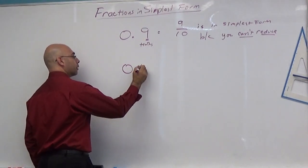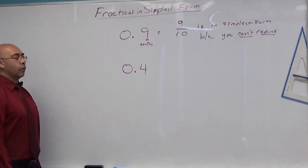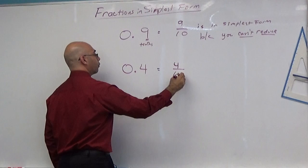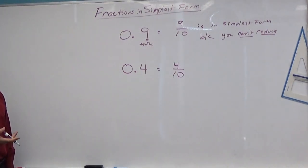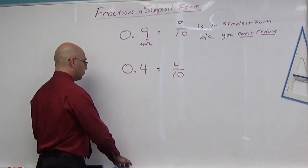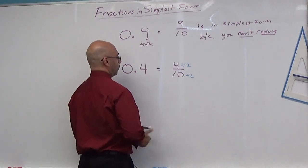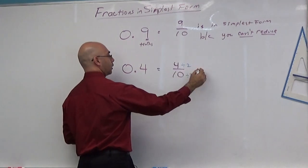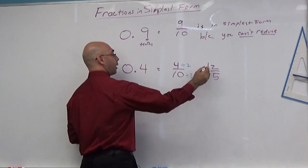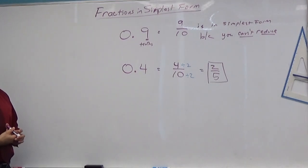How do I write that as a fraction? Yes, this is in the tenths place, so you write it as 4 over 10. Is this in simplest form? Why not? Oh, I could divide the top and bottom by 2. Exactly. Whatever you do to the numerator, you do the same thing to the denominator. That becomes 2 over 5. Can't reduce that anymore, so now that is in simplest form. Pretty simple.